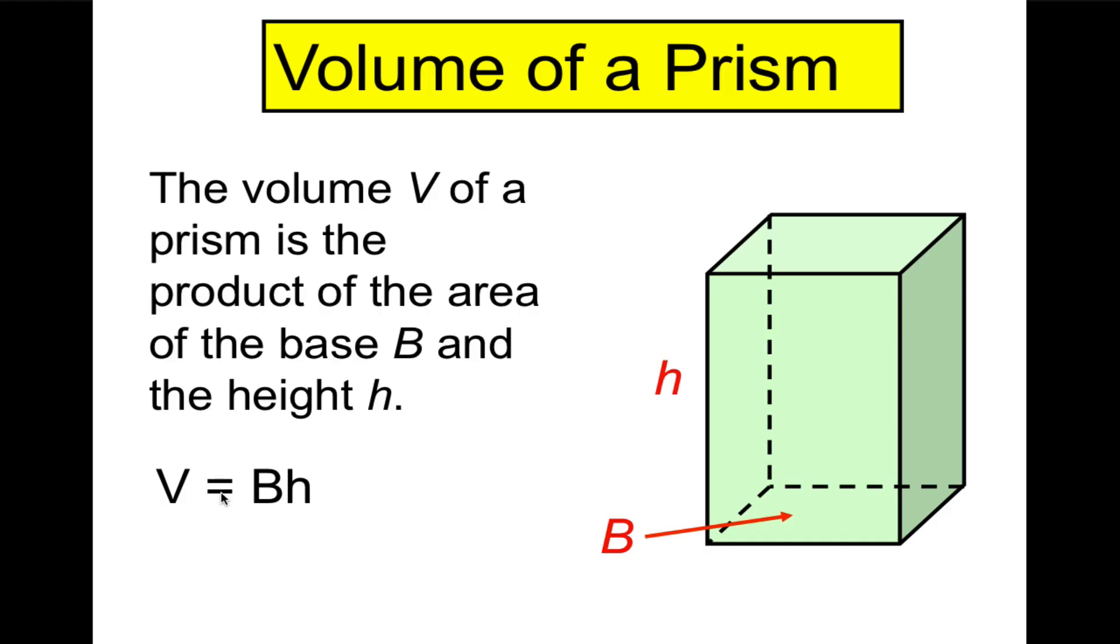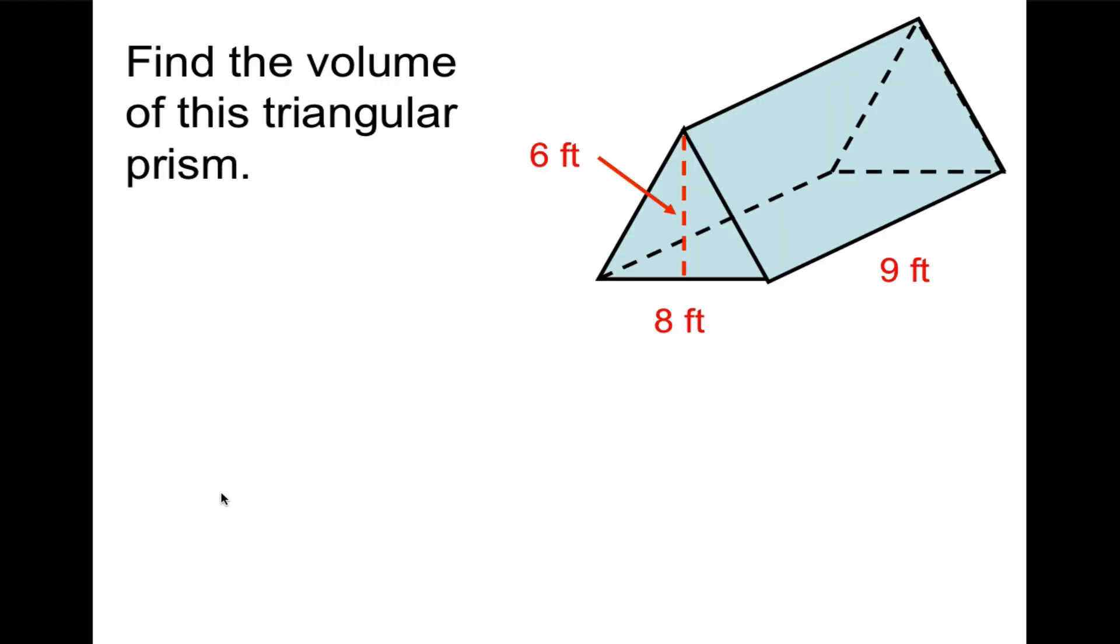Let's do a couple examples. Here's a triangular prism. So we're going to find the volume of this triangular prism. I'd like you to try and draw the triangular prism and label its parts. As you do so, I want you to realize what is the height of the prism as opposed to what is the height of the triangle. The height of the prism is 9 feet. The height of the triangle is 6 feet.